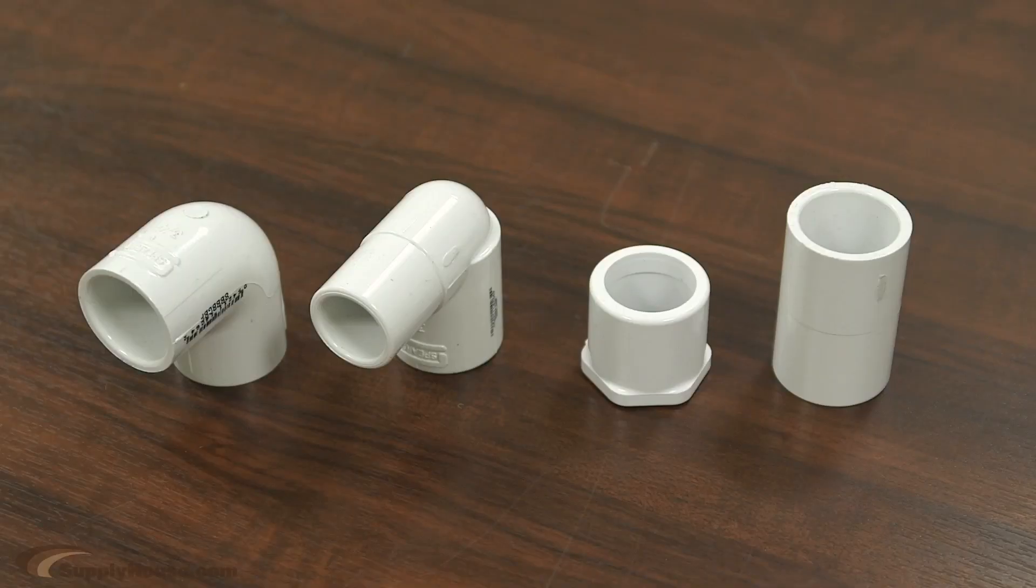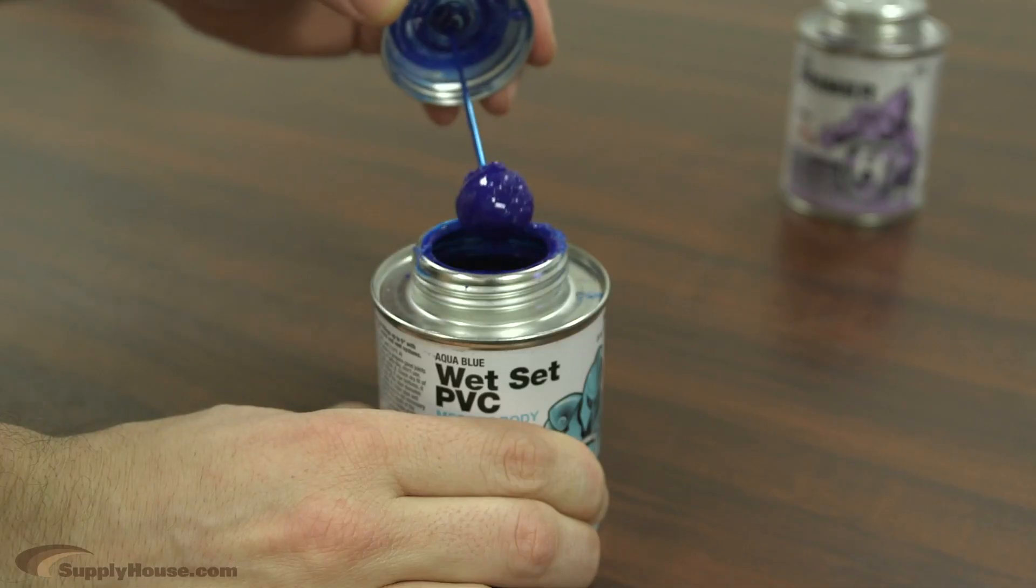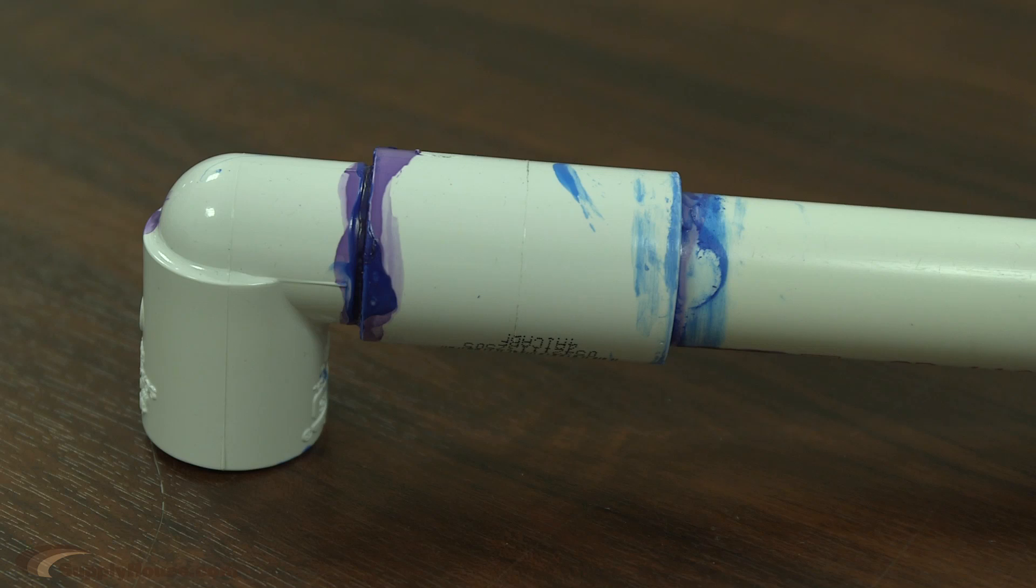PVC fittings are solvent-welded to PVC pipe using PVC cement. The cement is sticky like glue, but it actually melts plastic, creating a weld between the pipe and the fitting.